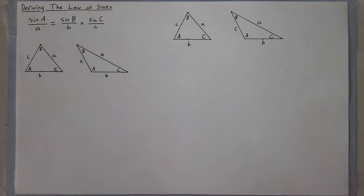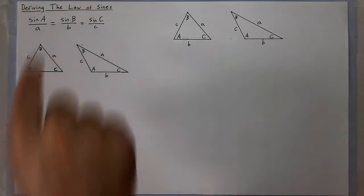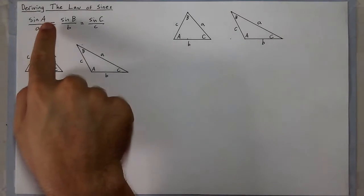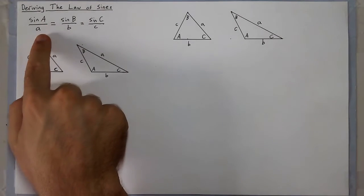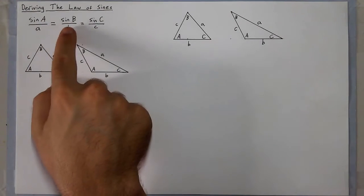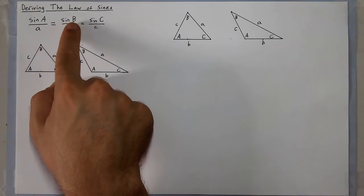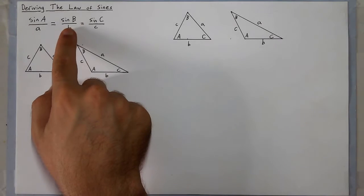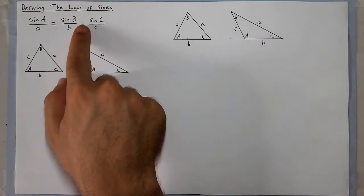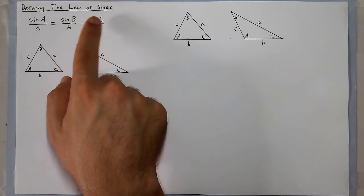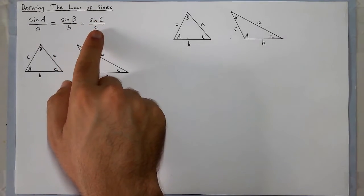In this video, we are going to learn how to derive the law of sines. The law of sines is the equation: sine of angle A over side a is equal to sine of angle B over side b, which is equal to sine of angle C over side c.